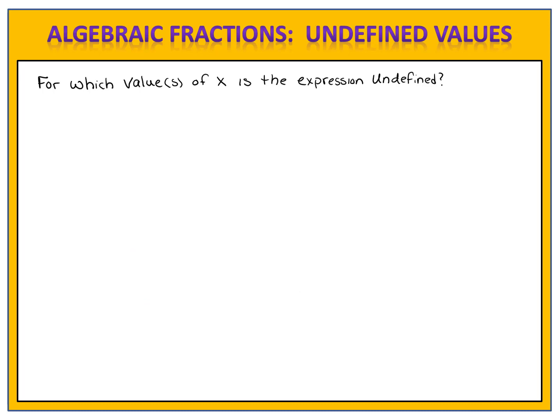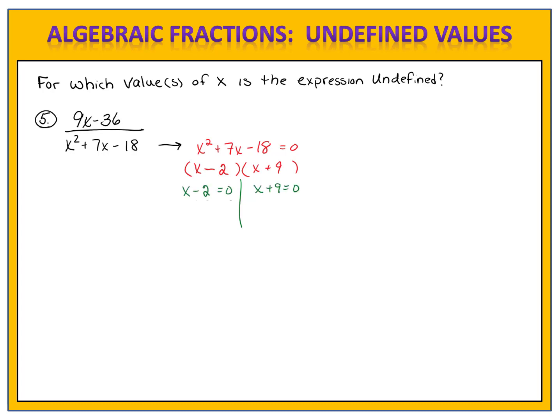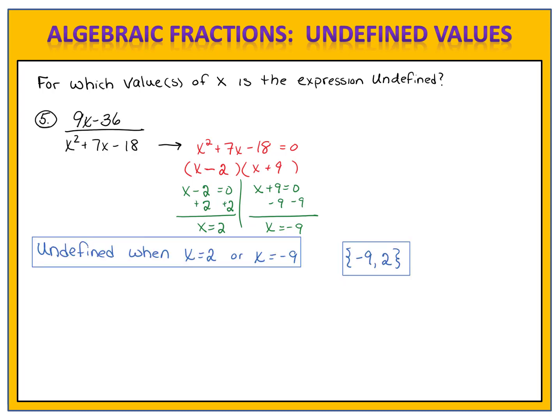Here's one like that for you to try. For which value or values of x is the expression undefined? 9x minus 36 divided by x squared plus 7x minus 18. We have a trinomial in the denominator, so we'll use our factoring approach. Please pause the video, give this problem a try, and come back when you're ready to compare answers. We begin by factoring the trinomial: x minus 2 times x plus 9. We then set each factor equal to zero and solve separately, finding x equals 2 and x equals negative 9. The fraction is undefined when x equals 2 or x equals negative 9. Remember you can write this using set notation, with the smaller number first.